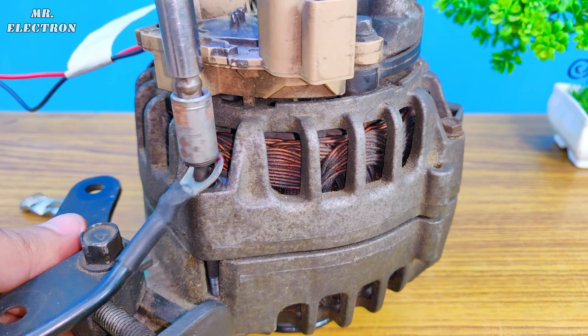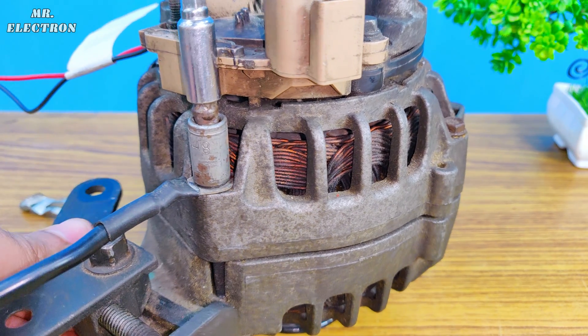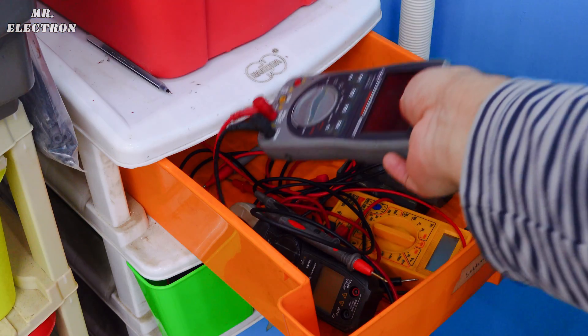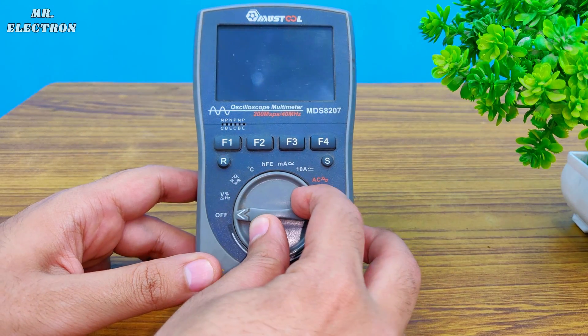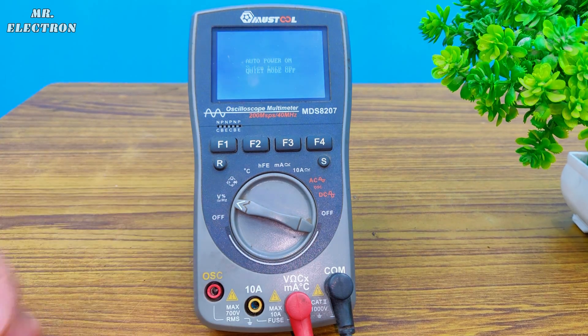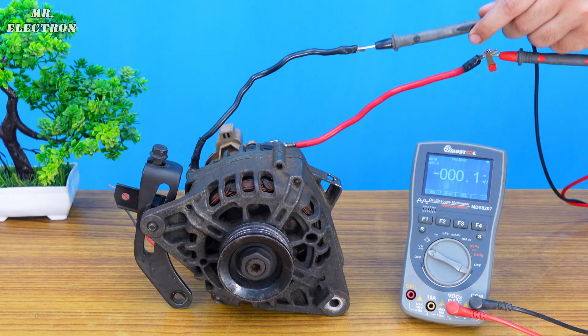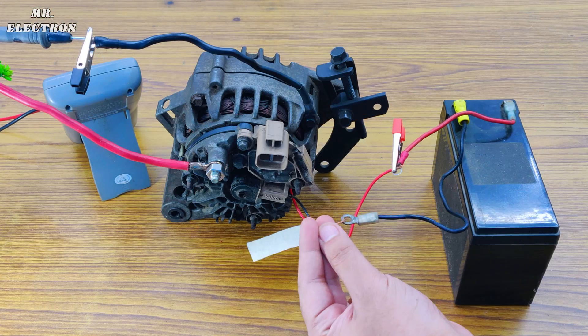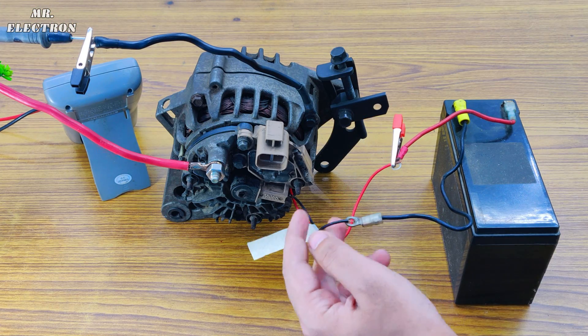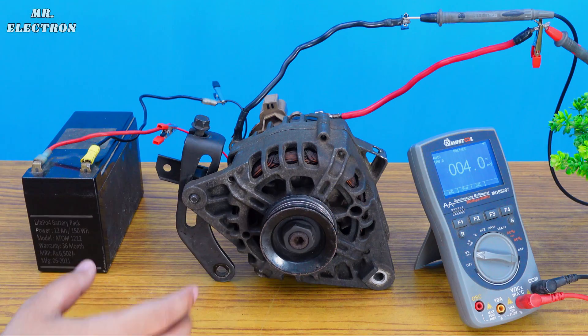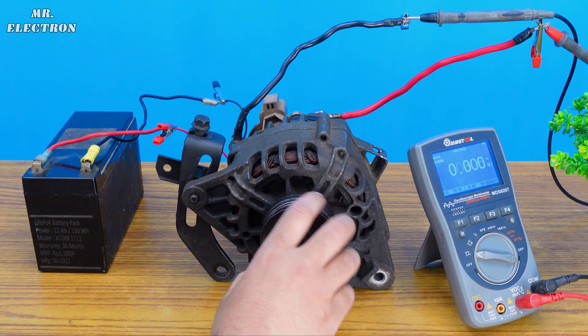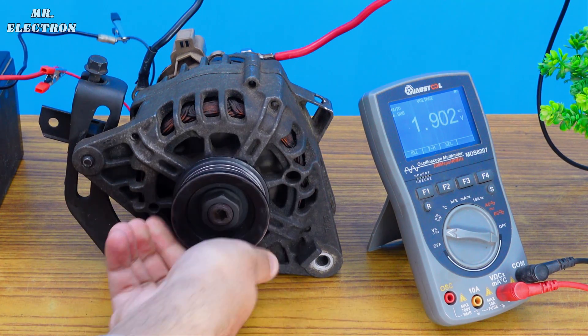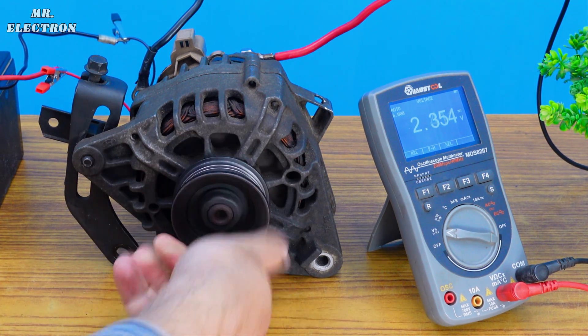Now time for power generation testing. Take a multimeter and point it to the DC voltage measurement mode. Next, connect the meter wires to the alternator output wires. Next, reconnect the battery to the rotor, and so our alternator is ready to produce huge electricity. If we turn the pulley of the alternator, you can see some generated voltage displayed on the meter screen.